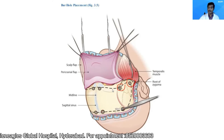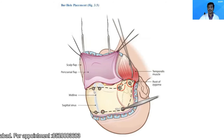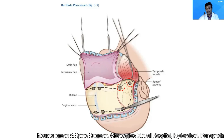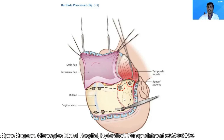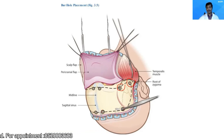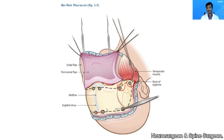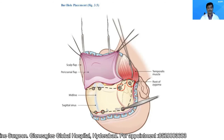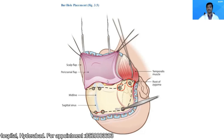Once you have placed the burr holes on either side, the last burr holes to be placed are the midline burr holes. Then, using a penfield dissector, separate the dura matter at the level of the burr holes and beyond as far as possible. When separating dura between the two paramedian burr holes, be very careful — if the dissector enters the superior sagittal sinus, it may cause catastrophic bleeding.